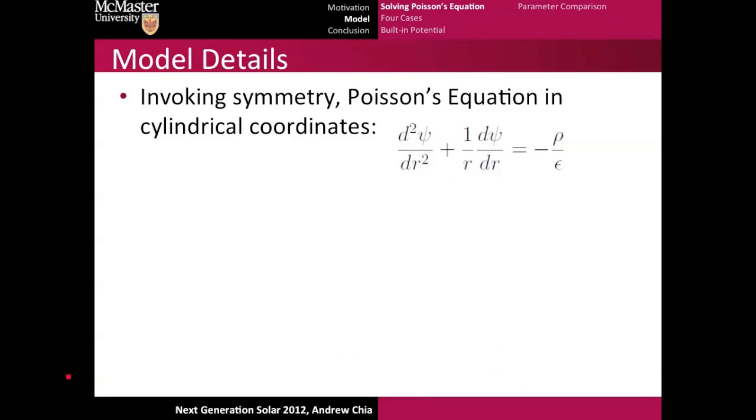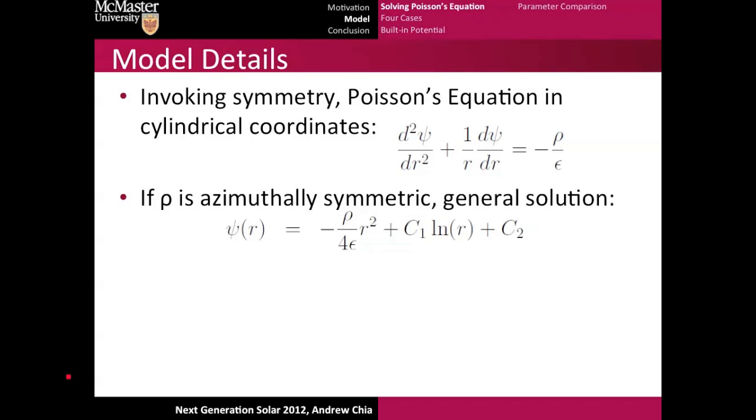Let's jump right into the model. At its base level, the model solves Poisson's equation to get band profiles in the nanowire. We can express Poisson's equation in cylindrical coordinates and get a general solution in terms of rho, C1, and C2, which are constants, and epsilon, which is material-specific. Today we'll look at gallium arsenide as our material of choice.